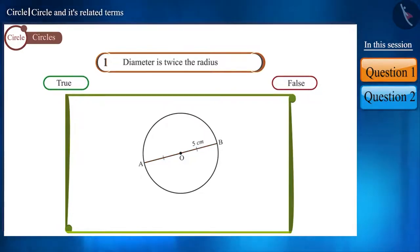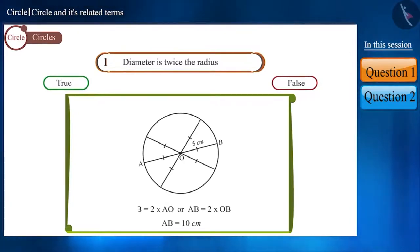So they will be equal. That is, we can write AB as 2AO or 2OB. That is, AB has a length of 10 cm. Thus, we can say that all diameters of a circle have the same length, which is twice their radius.